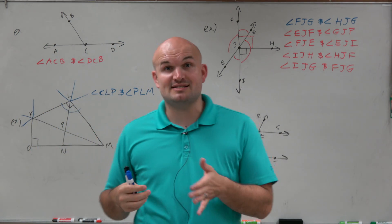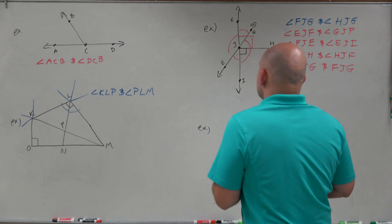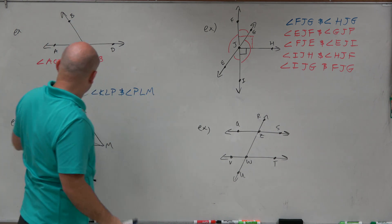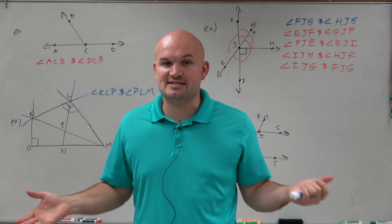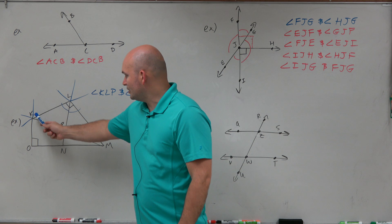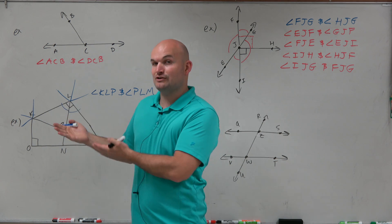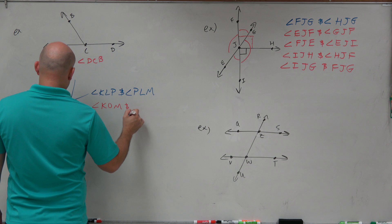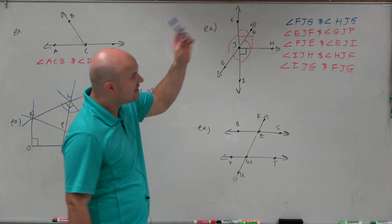As for supplementary angles — notice those two angles are adjacent, but remember, supplementary and complementary angles do not have to be adjacent. The definition of supplementary angles is simply two angles that add up to 180; they don't have to be adjacent. Complementary is two angles that add up to 90; they don't have to be adjacent either. It's very common, but not always necessary. Notice that angle KLM is 90 degrees and angle KOM is also 90 degrees. Two 90-degree angles add up to 180, so they're supplementary. Angle KOM and angle KLM are my two supplementary angles.